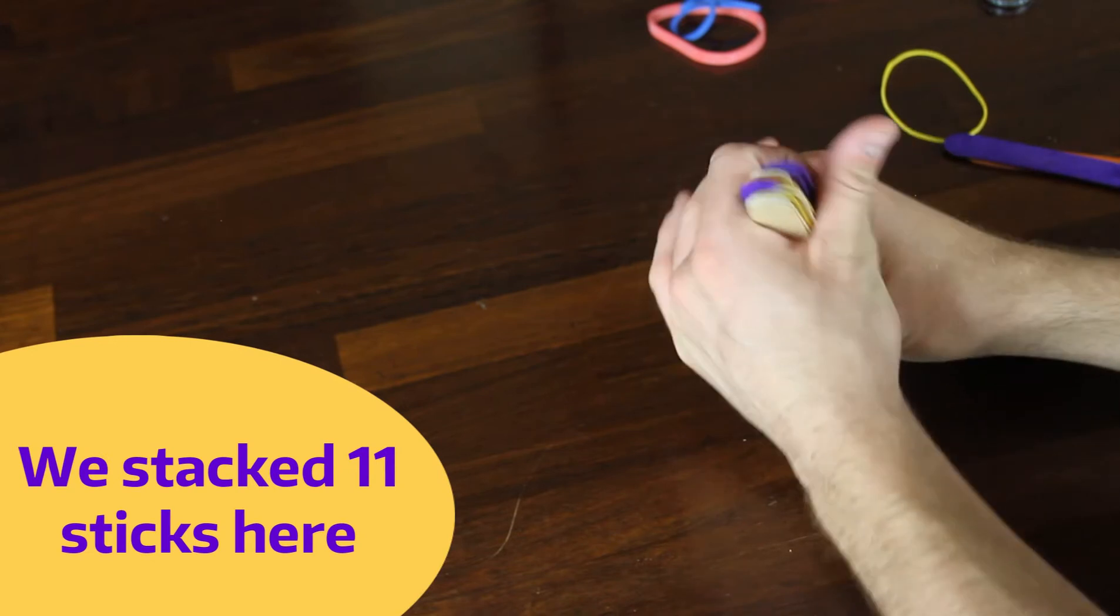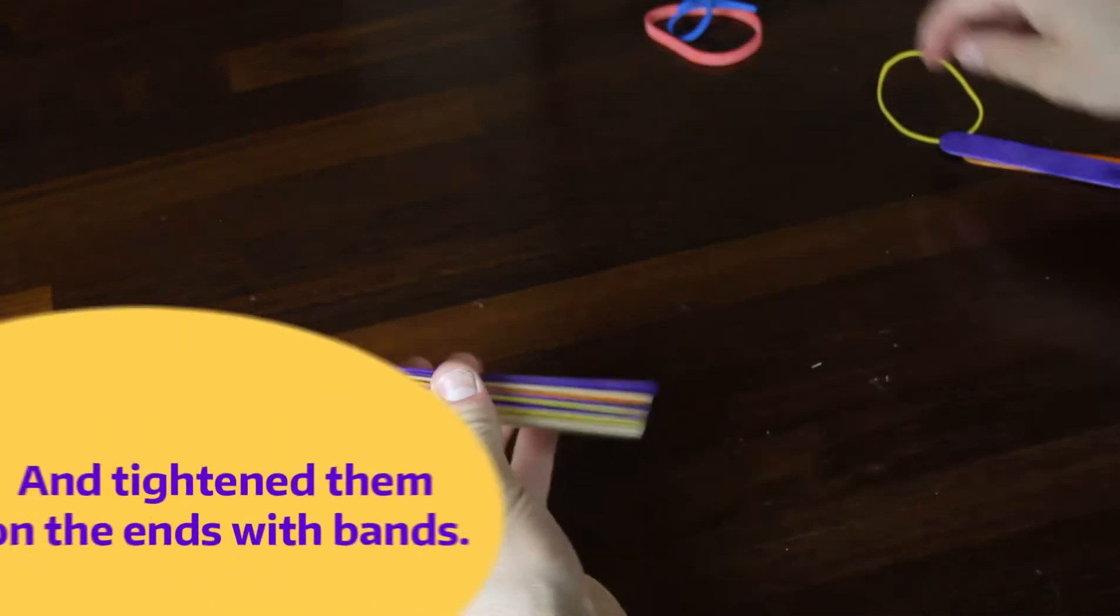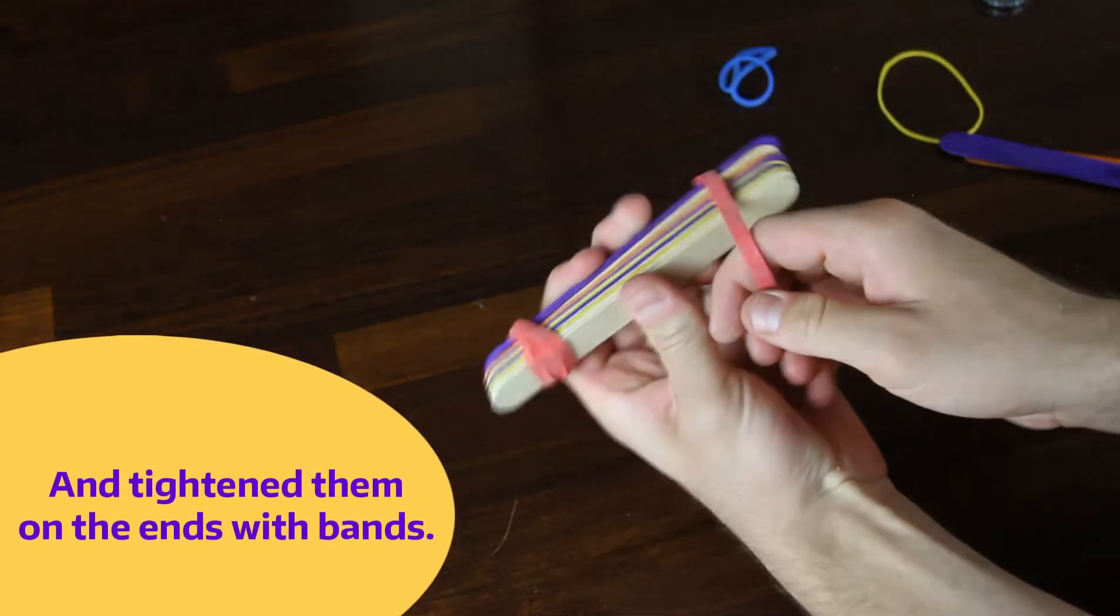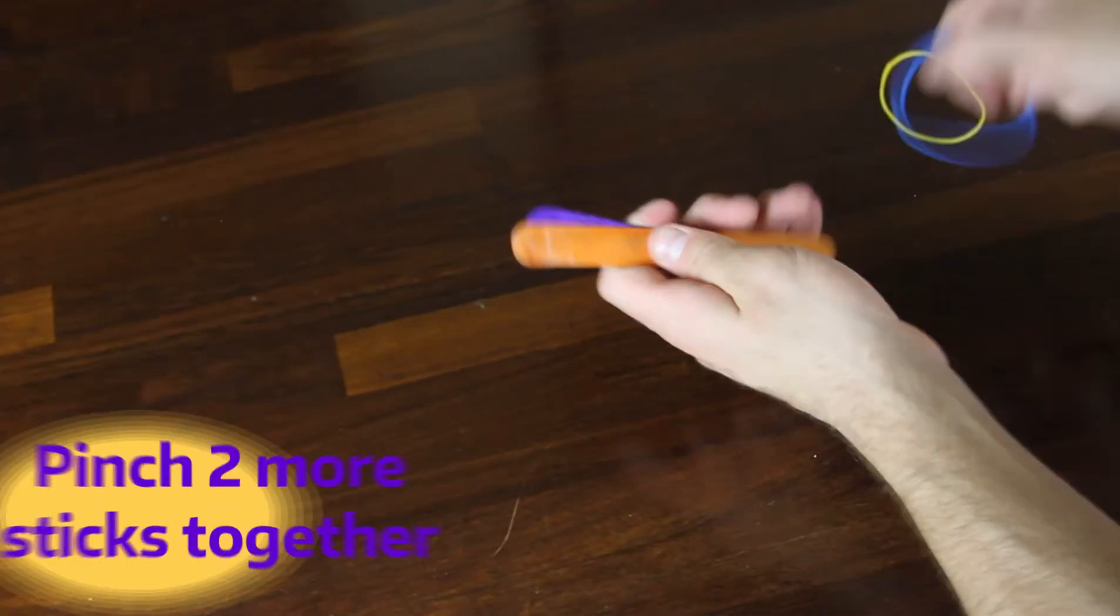What we want to do here is get about 10 to 12 sticks, stack them on top of each other, and then band them down on the end. That will be our base. Then we want to get two more sticks but only band them together on one side of each other.